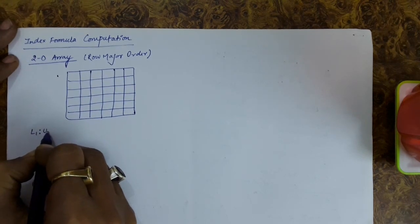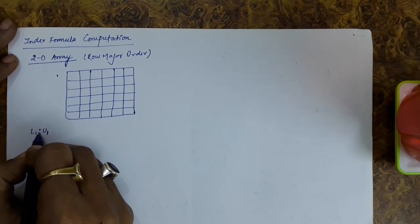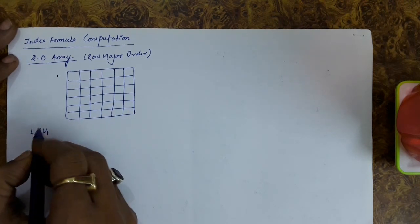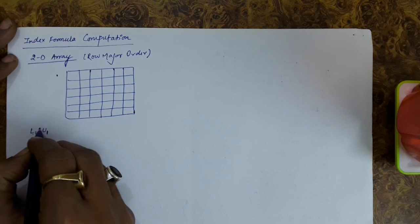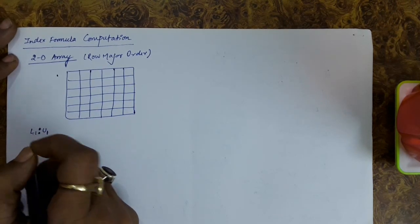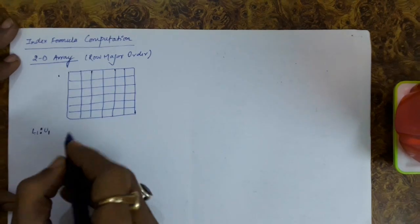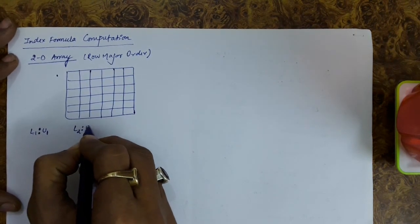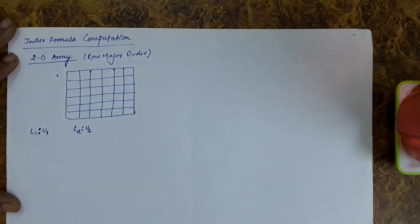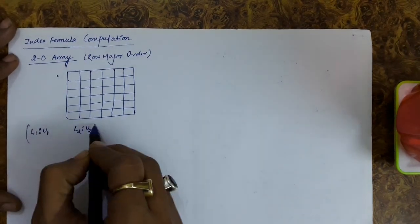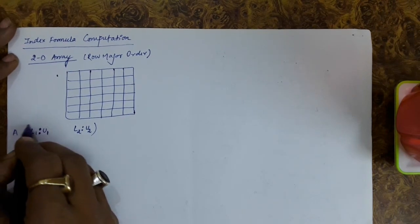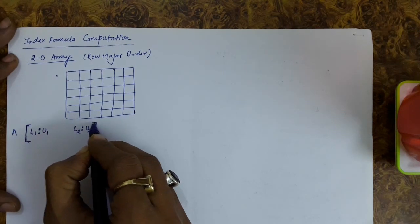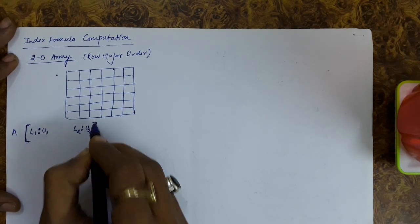For the 2D array, if there are two dimensions, for the row side let's say the dimensions are L1 and U1. L1 is the lower bound and U1 is the upper bound, just as we used in the one-dimensional array — lower bound is the first index and upper bound is the last index. Similarly for the column side, let's say we have L2 and U2.